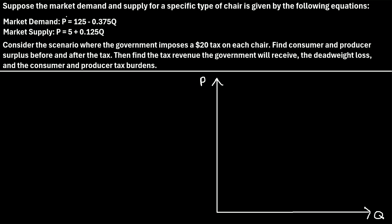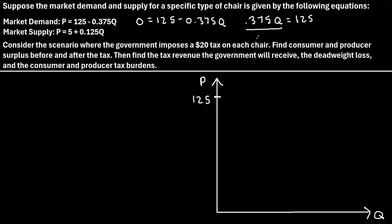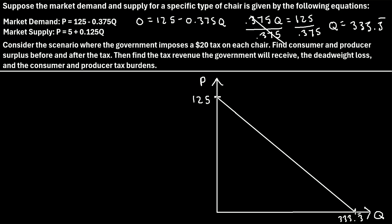If we plug in a 0 for Q, we end up with P is equal to 125. So the demand curve will intersect this y-axis right here at 125. Then we can also find where it intersects the x-axis. To find this point, we plug in a 0 for P, so we get 0 is equal to 125 minus 0.375Q. Adding 0.375Q to each side gives 0.375Q is equal to 125. Dividing both sides by 0.375, we get Q is equal to 333.3 repeating. So let's label that on the x-axis, and we can draw a line to connect these two points. This is our demand line, labeled D.